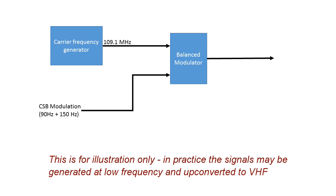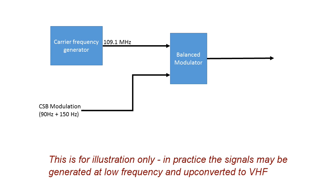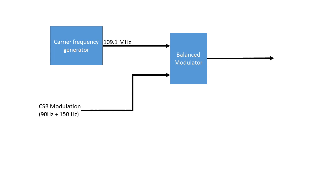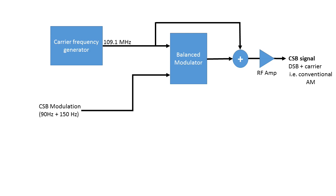The RF signals are generated as follows. There's a VHF carrier signal generator — a low frequency crystal oscillator with frequency multiplying stages to reach the required frequency between 108 and 112 MHz. For the CSB signal we produce a double sideband full carrier signal, a conventional AM signal, using a balanced modulator to give a DSBSC signal then adding the carrier back in at the required modulation depth. The CSB signal passes through a linear RF amplifier to feed the antenna system. The SBO signal is fed to another balanced modulator and the resultant DSBSC signal is amplified. In the SBO signal chain is a variable attenuator which controls the SBO output power and thereby adjusts the course width. There is also a variable phase shifter nominally set to 90 degrees to compensate for tolerances in feeder lengths.